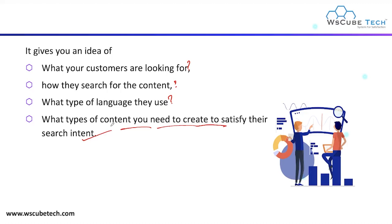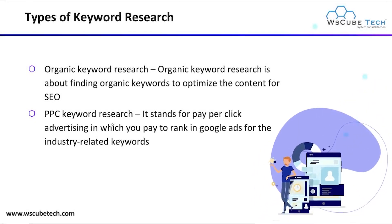These are the basic ideas you can get with the help of keyword research. When you do keyword research, you get all these pointers in mind, and after getting information on all these pointers, you are able to create very good content which gives you very high ranking on Google's search engine result page.